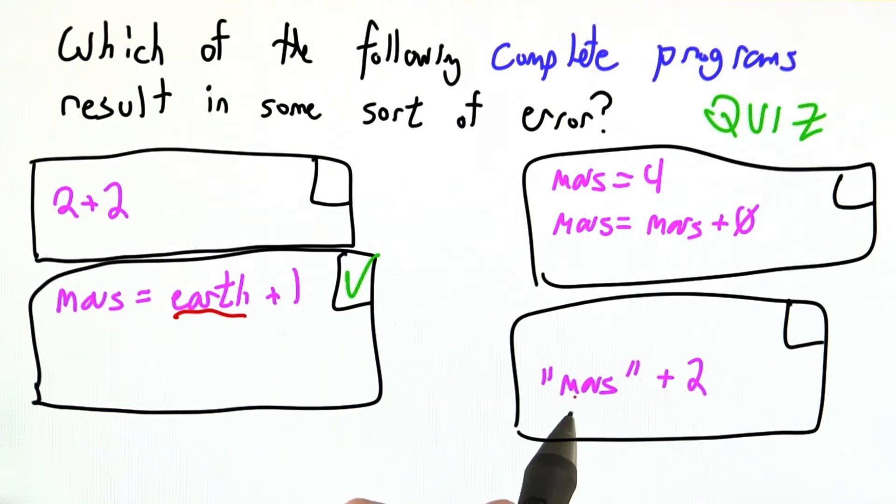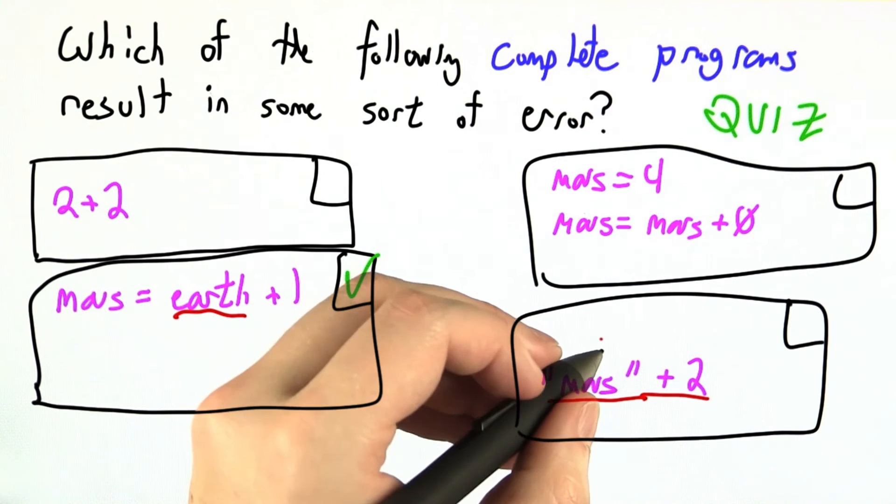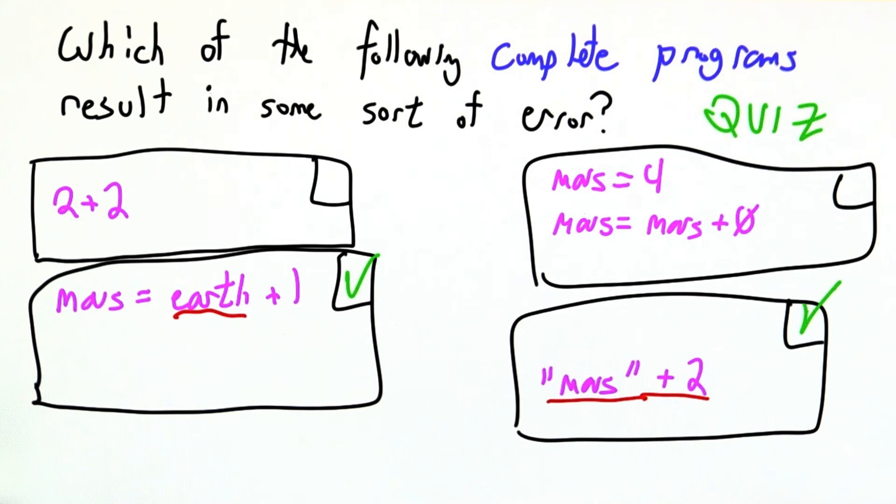But finally in this last one we take a string, Mars, and we add an integer 2 to it. We don't expect addition to work on both strings and integers, so this one also leads to an error.